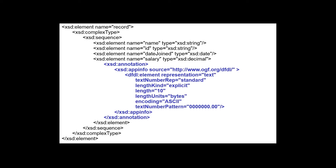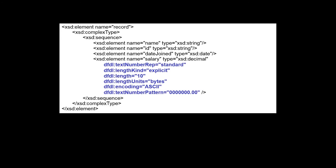Here we can see some of the DFDL properties for the salary element. The DFDL properties describe the salary element as a fixed length, right justified, ASCII text decimal number that is 10 bytes long with a decimal point in the eighth byte. The DFDL annotation shown here is in what is called attribute form. The same information can be conveyed by using a more compact syntax known as short form, where the DFDL properties are carried as attributes directly on the schema object.